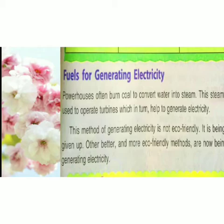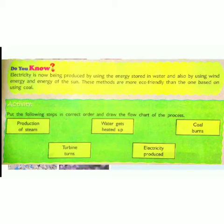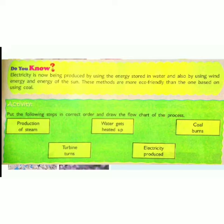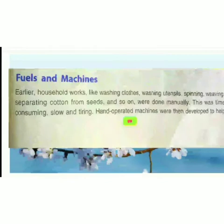It is being gradually given up, and other better and more eco-friendly methods are now being used for generating electricity. Electricity is now being produced by using the energy stored in water, wind energy, and energy of the sun. These methods are more eco-friendly than the one based on coal. Coal is a non-renewable fuel, while sun, water, and wind are renewable sources of energy. Nowadays we are using these renewable and eco-friendly sources of energy instead of coal.